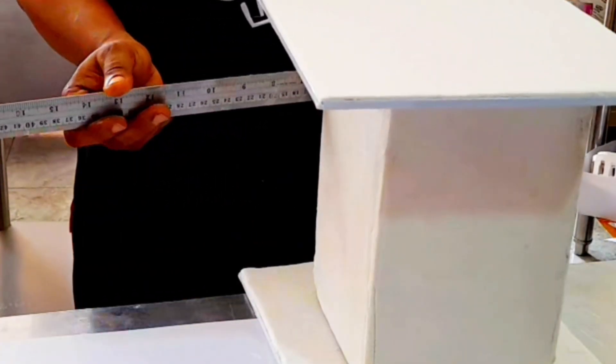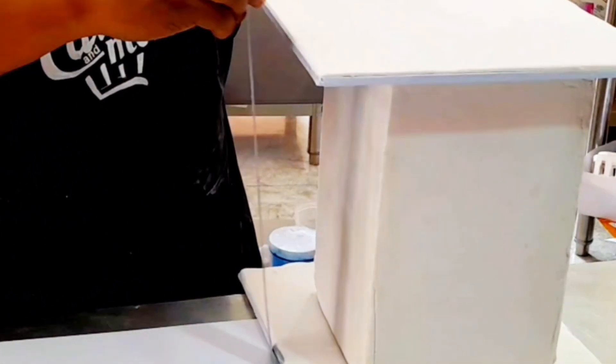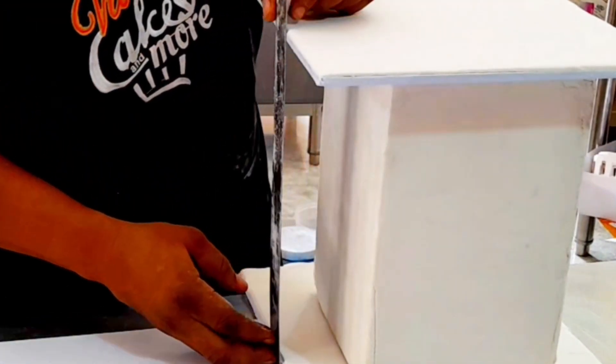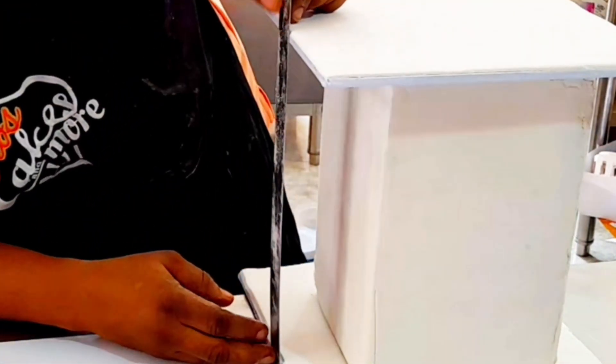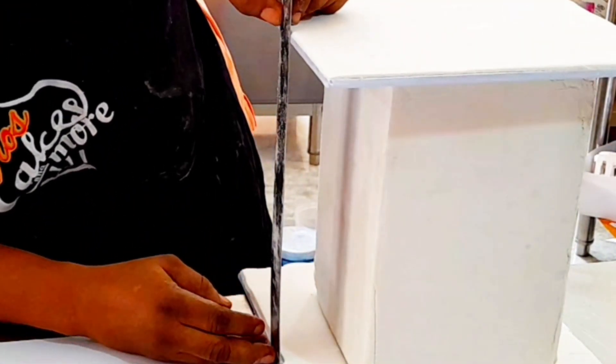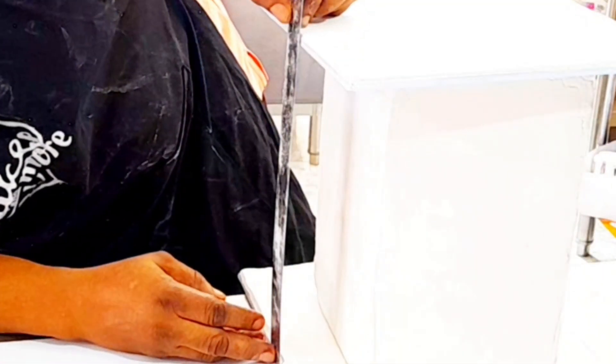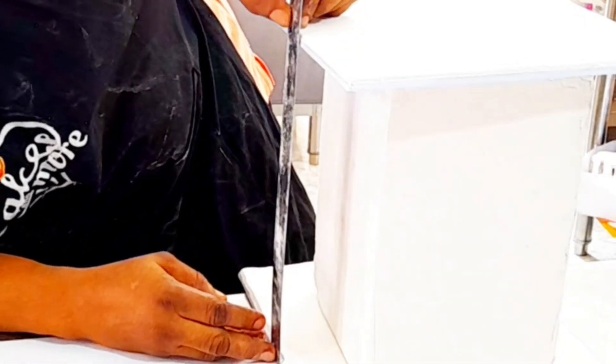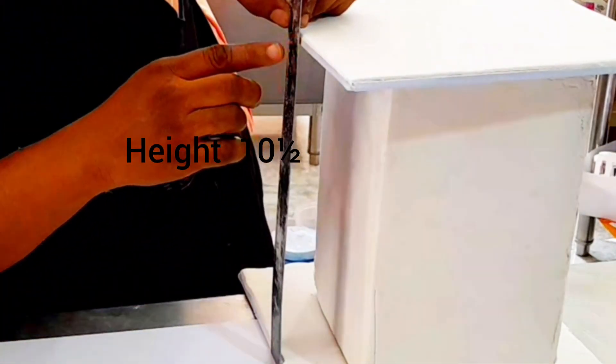Now position a 10 inches board under the kick and 10 inches board on top of the kick. After that, take the accurate measurement from the downside of the board to the upper side of the board. The measurement gave me 10 and a half inches.